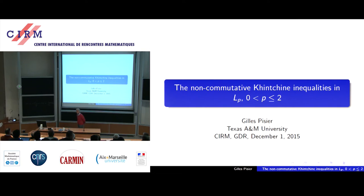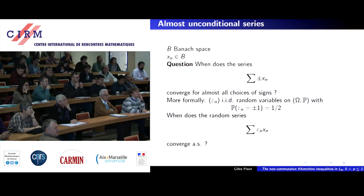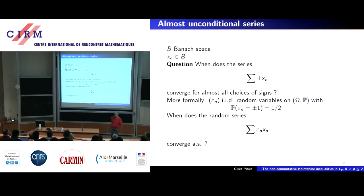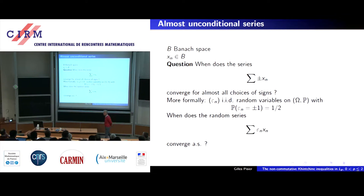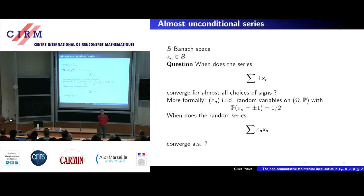Thank you to the organizers for the pleasure of giving this talk. I take the presentation in a broader perspective, to show that these inequalities are good for something. Let me start by explaining that they connect with a broad general problem: studying almost unconditional convergence when you have a sequence of vectors in a Banach space, choosing signs independently at random, and asking when this series converges for almost all choices of signs.